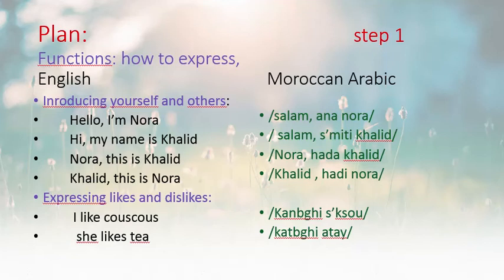'Hi, my name is Khalid' → 'Salam, Smitty Khalid.' So 'hi' and 'hello' are both 'Salam.' 'Smitty' means 'my name is.' Khalid is a masculine name.